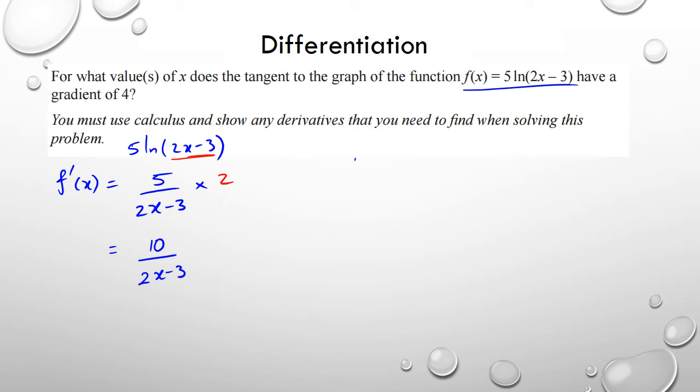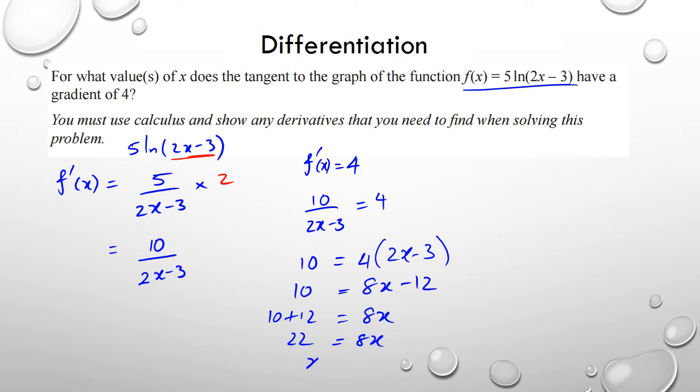Now they're asking for what values of x does it have a gradient of four, so we have f dash of x equals four. So we have 10 over 2x minus 3 equals four. Rearranging it, I'm going to get 10 equals 4 times 2x minus 3. Expanding it, I have 10 plus 12 equals 8x, so 22 equals 8x, and x is equal to 22 over 8. Just straightforward differentiation, put it equal to the value, and then just sort it out. This is also another achieved question.